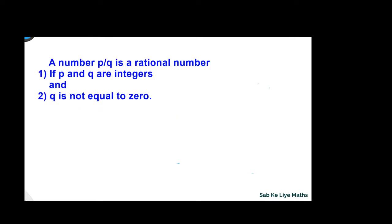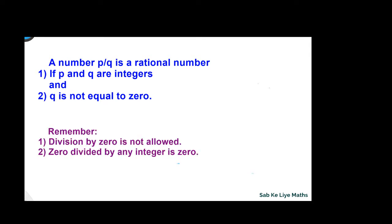The definition of a rational number: a number P by Q is a rational number if, first, P and Q are integers, and second, Q is not equal to 0. Now we will try to understand some examples of rational numbers.